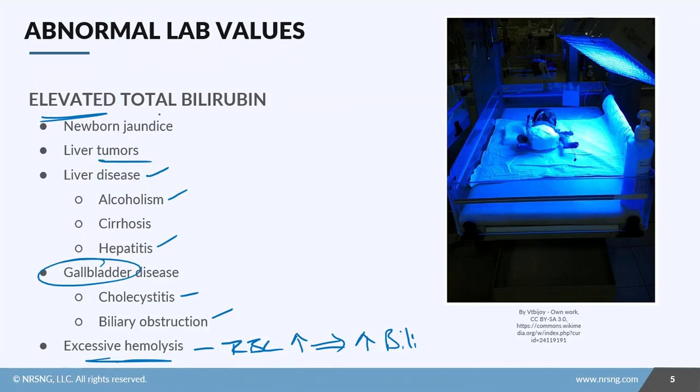Most commonly, you're going to see this in newborns. Newborns lack the ability to break bilirubin down like they should, so what we do is we use this therapy called phototherapy. Phototherapy means that we're using light to break down the bilirubin because bilirubin is extremely susceptible to light.